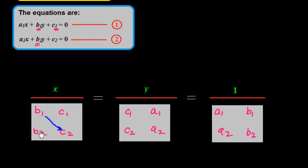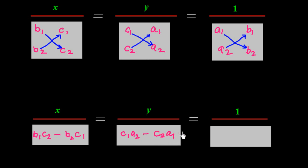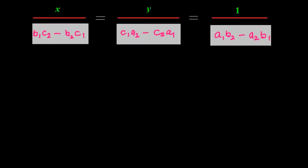We multiply b1 into c2 and subtract b2 into c1 from it, and follow the same pattern for all terms. So under x we get b1 times c2 minus b2 times c1. Under y we get c1 times a2 minus c2 times a1. Under the constant we get a1 times b2 minus a2 times b1. Now we know that x over this, y over this, and 1 over this are all equal fractions.